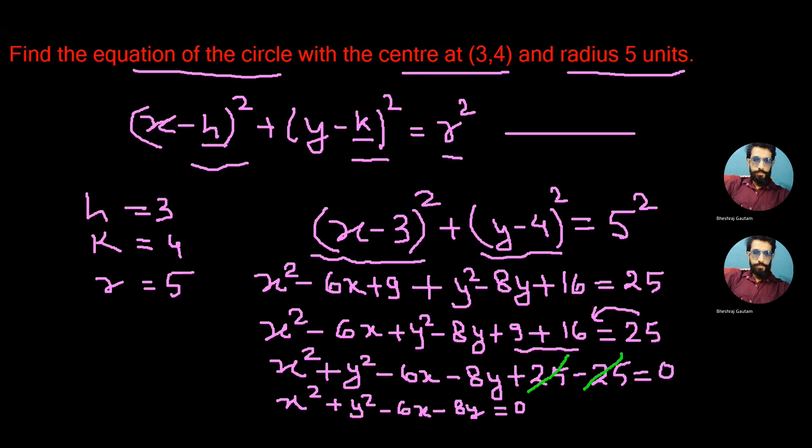And finally we can write x² + y² - 6x - 8y = 0 as the required equation of the circle. So this is the solution for today's problem. Isn't it simple? Please support sharing the content and channel among your friends. Thank you. See you in the next video.